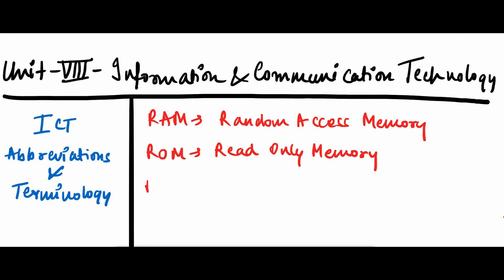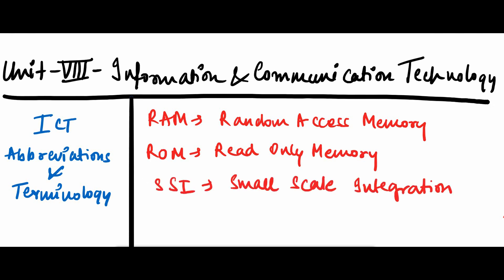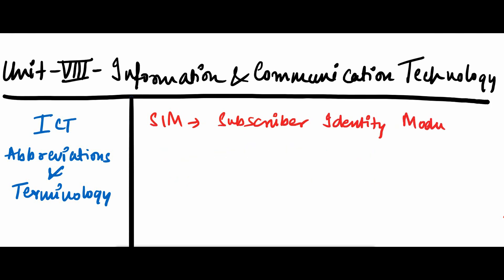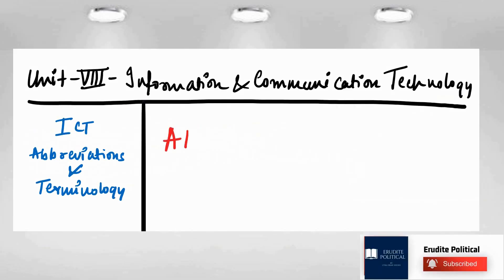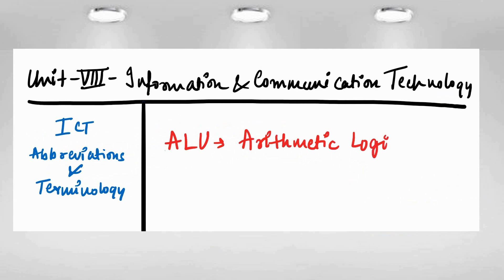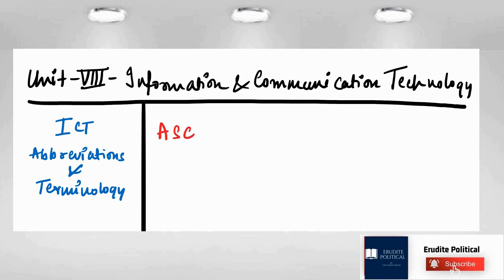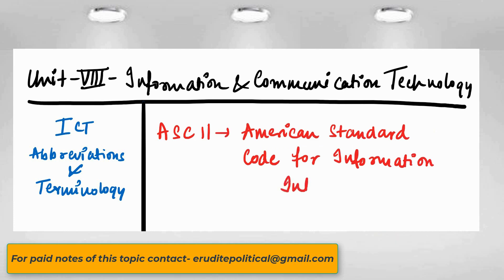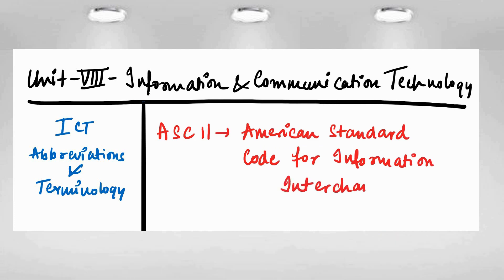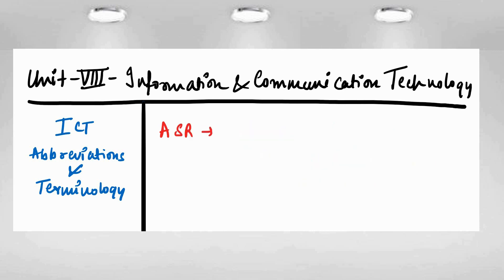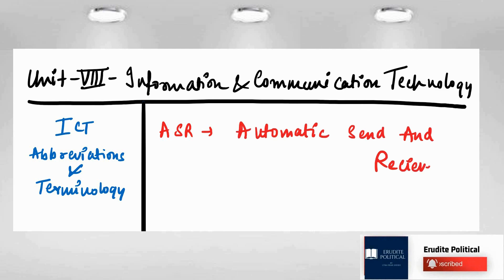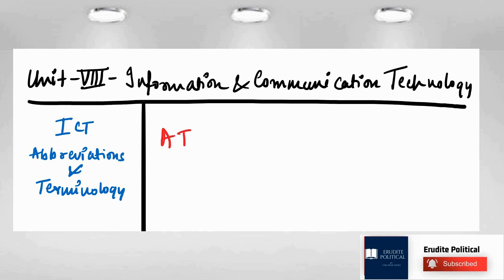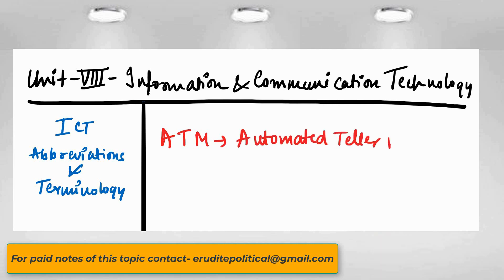Next is SSI — Small Scale Integration. Another one is SIM — Subscriber Identity Module. ALU stands for Arithmetic Logic Unit. Next is ASCII — American Standard Code for Information Interchange. Next is ASR — Automatic Send and Receive. Next is ATM — Automated Teller Machine.